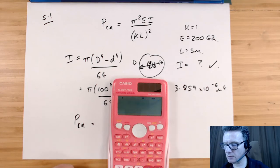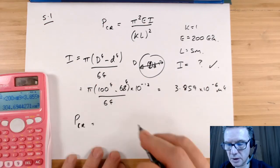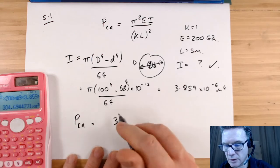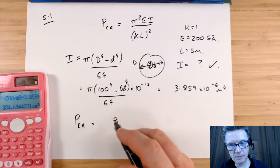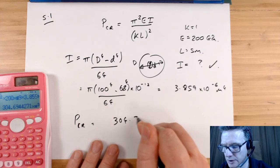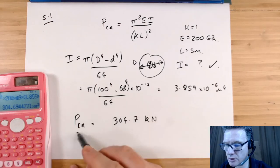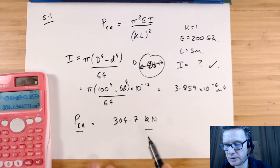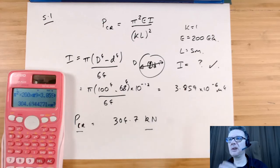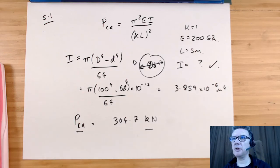We're taking k to be 1. So that gives me 304.7 kilonewtons critical load. Alright, that's all I have to do for that one.